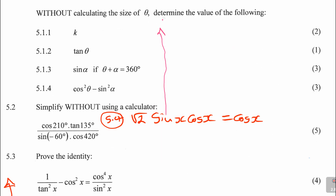Let sine x be equal to y, and then let cos x be equal to z. Look what I'm going to have. Whether sine x, I'm going to have square root of 2yz is equal to z.